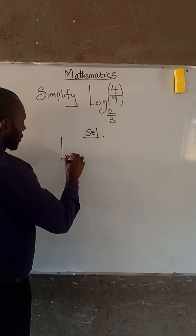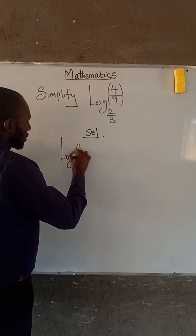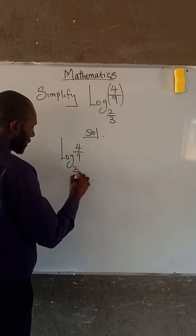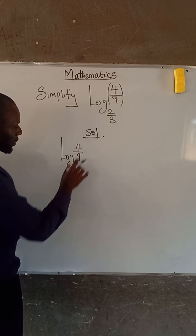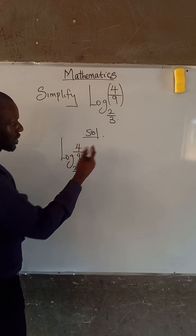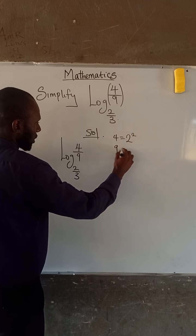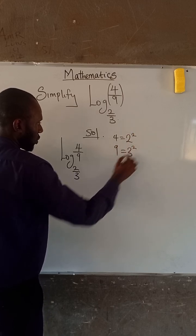We have log of 4 divided by 9 with a base of 2 divided by 3. Now if you look at this expression, 4 can be expressed as 2 to the power of 2, and 9 can be expressed as 3 to the power of 2.